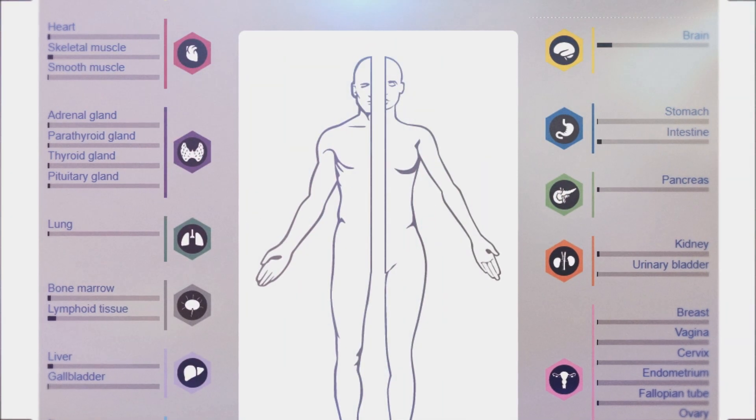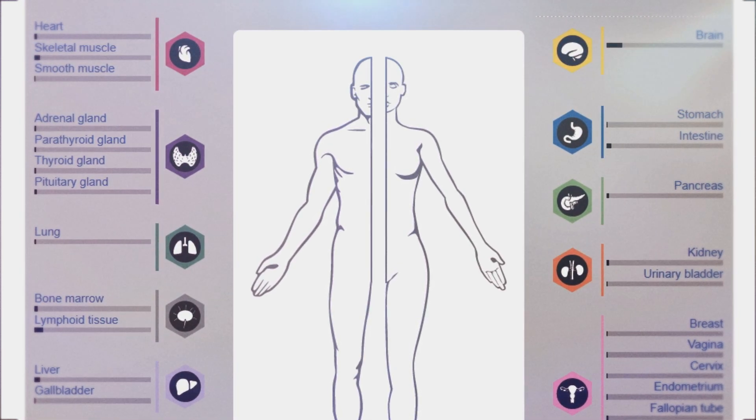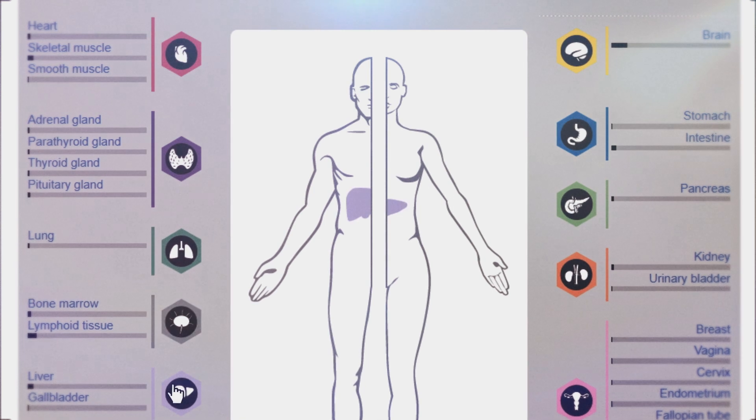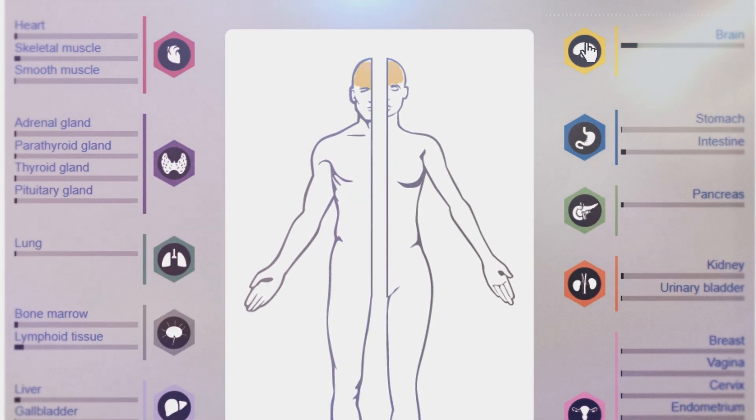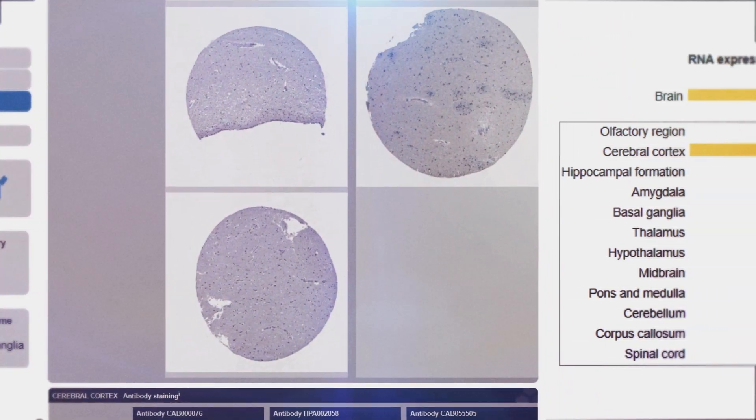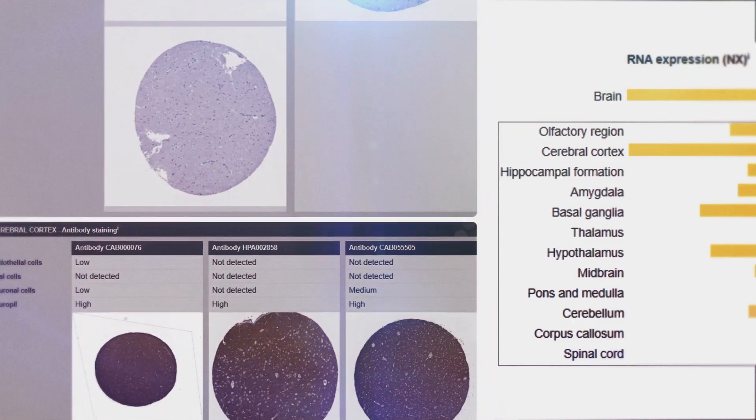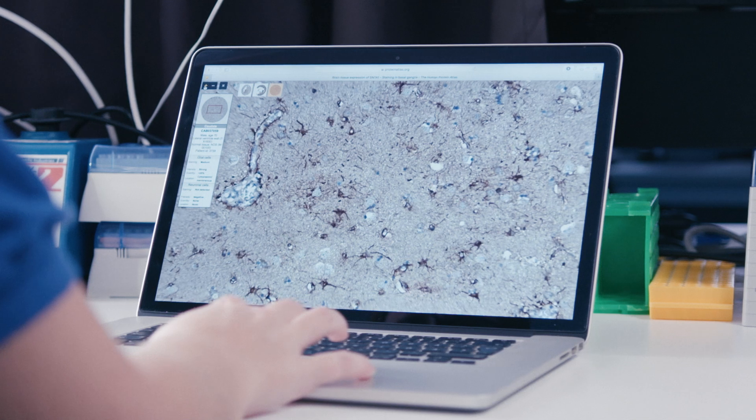The tissue atlas contains information about the location of proteins in all major organs in the body, such as the liver, heart, kidney, pancreas, and the brain. Millions of microscope images created by the HPA consortium are available here, allowing the study of each protein down to the single cell level.